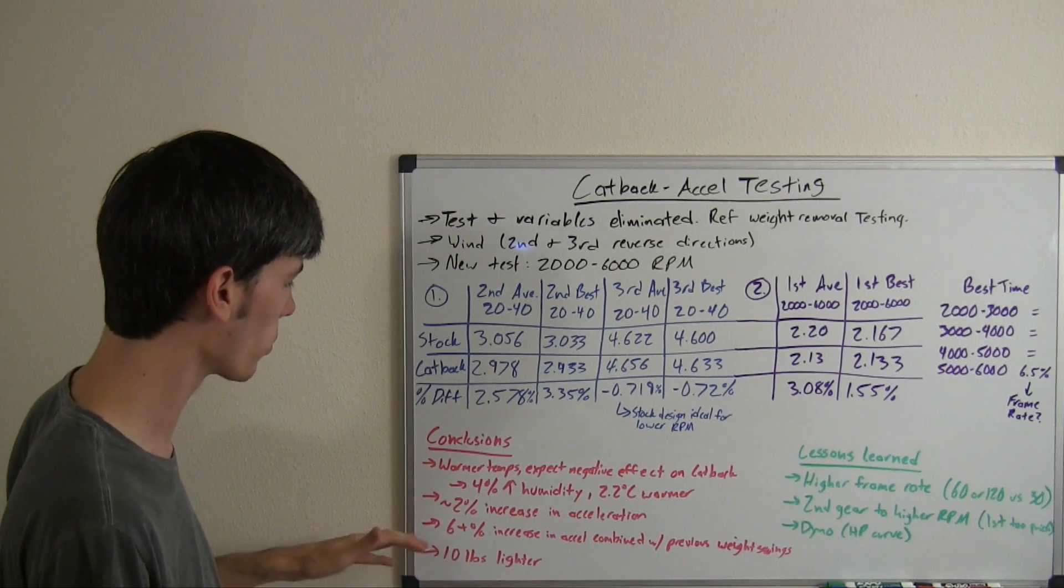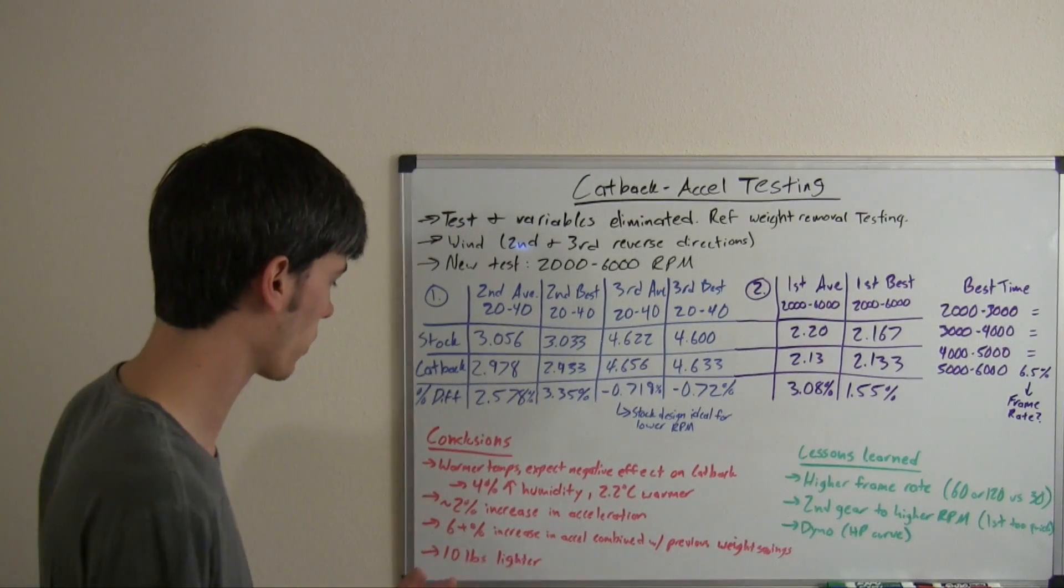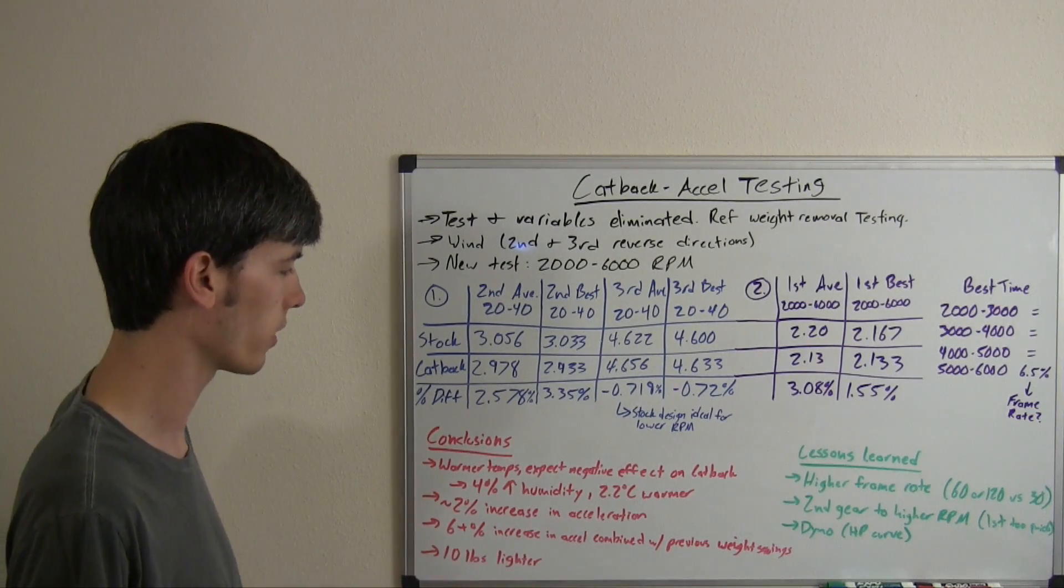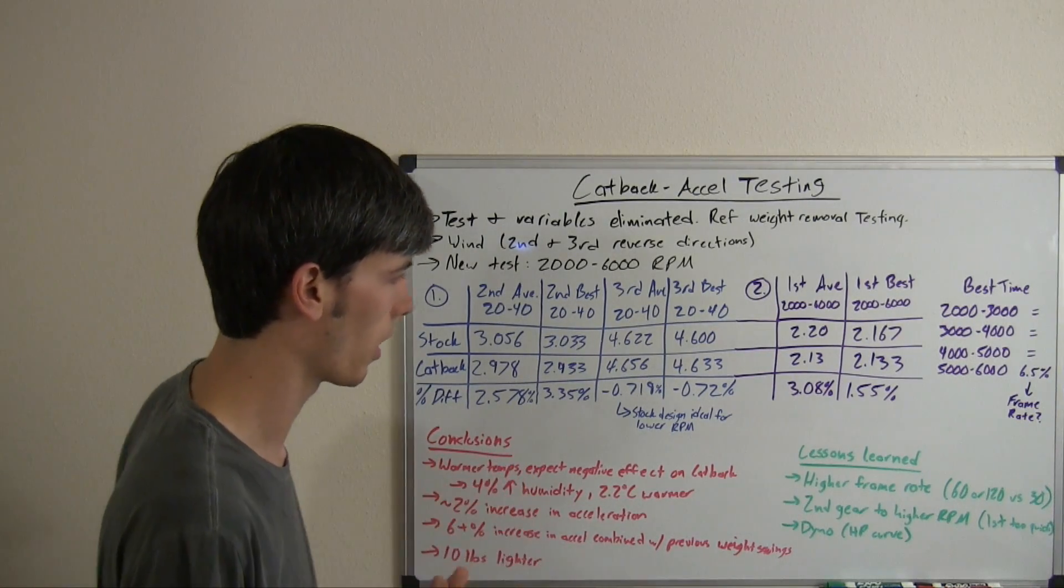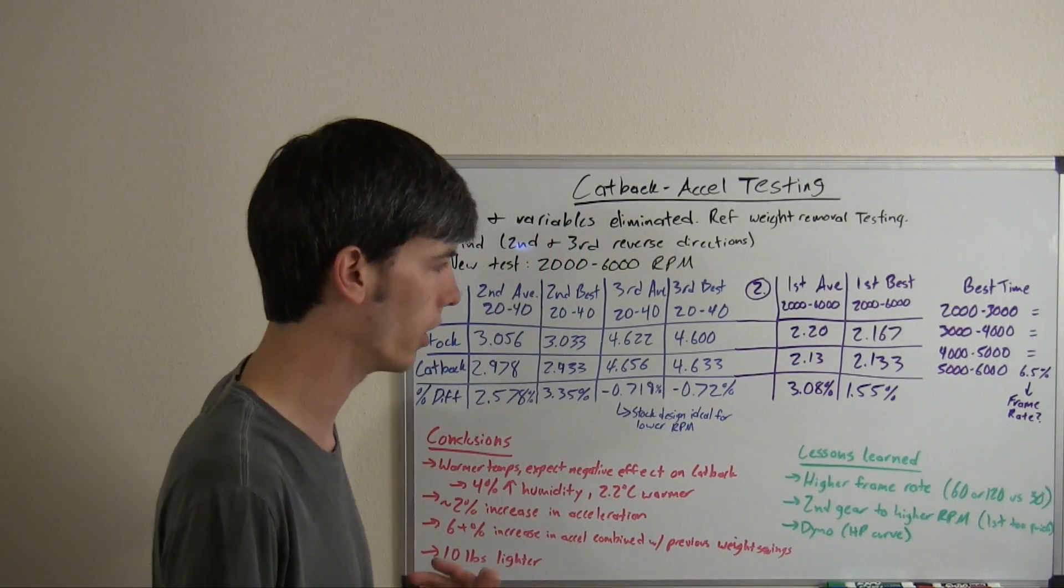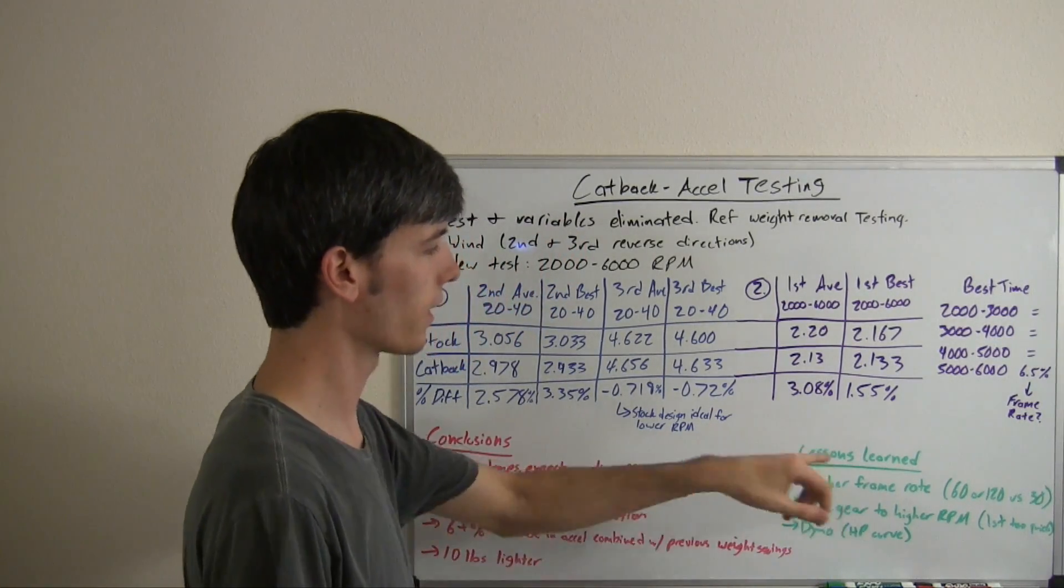The other conclusion was this cat-back is 10 pounds lighter. That's always a positive gain, all kinds of benefits from removing weight from a car. So, lessons learned. What did I learn from this testing and how can I improve my future testing?